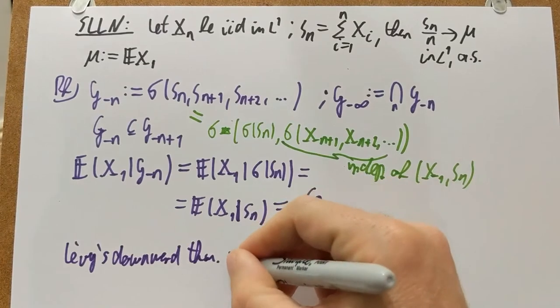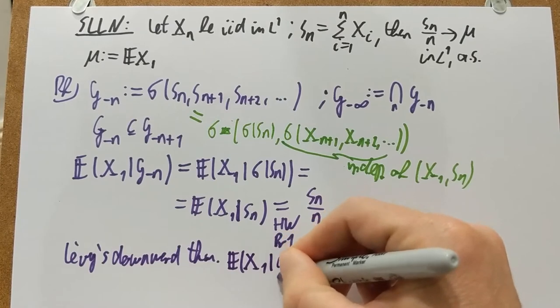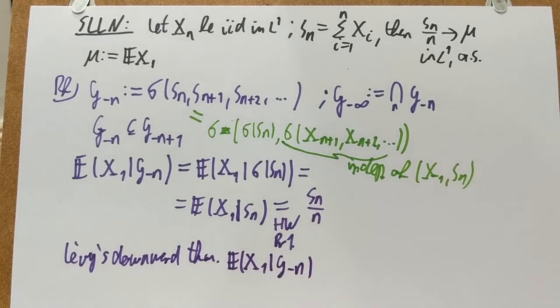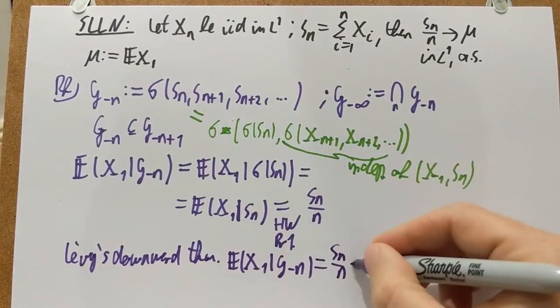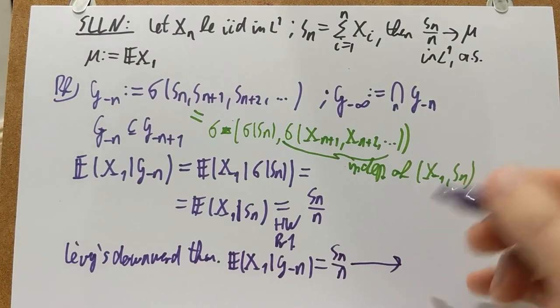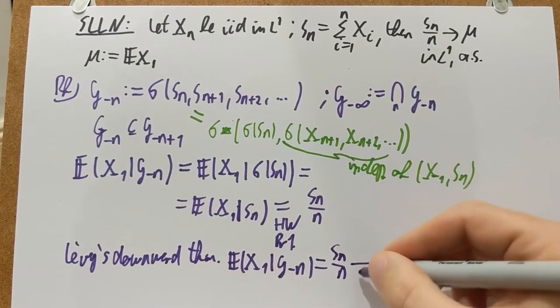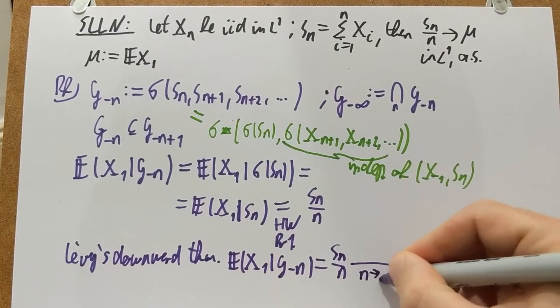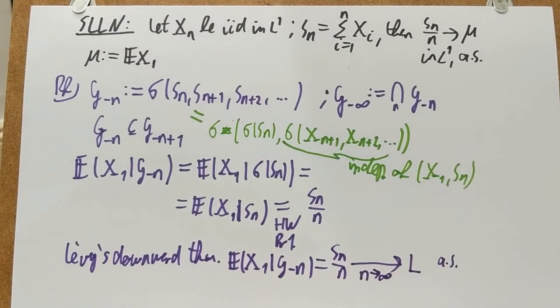So this thing, E of any random variable, which now happens to be X_1. But in Levy's downward theorem, it was just any random variable. And happened to look at X_1. This will converge. And notice that it's still equal to S_N over N. This will converge to some limit. I'm going to call this limit L. S_N goes to infinity. I could as well call this M_∞. You have this limit almost surely. So that's Levy's downward theorem.